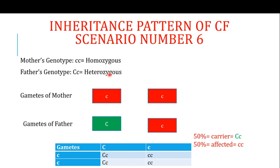In Scenario 6, the mother is a patient of cystic fibrosis with both copies mutated, and the father is a heterozygous carrier. All of the mother's gametes carry the mutated copy; 50% of the father's gametes are normal and 50% carry the mutated allele. When crossed, 50% of offspring will be carriers and 50% will be affected. These are the key inheritance scenarios for cystic fibrosis.